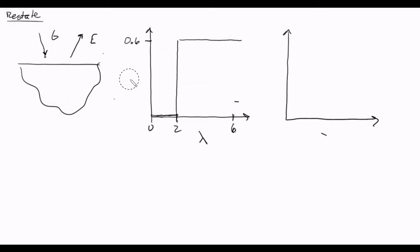This is the spectral apparent absorptivity profile — the absorptivity of our surface for each individual wavelength. Any wavelength hitting our surface between zero and two, it absorbs nothing, or zero. And then any irradiation between two and six, it will absorb 0.6 of that irradiation. So that's our absorptivity profile, but then we've also been given an irradiation profile.